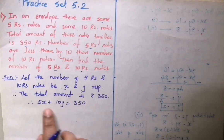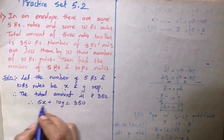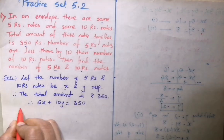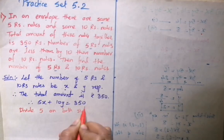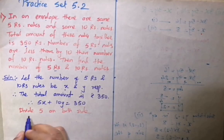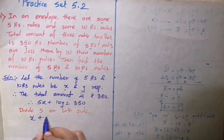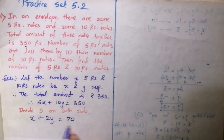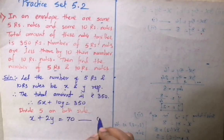Now students, observe that all the numbers are divisible by 5. So divide both sides by 5. Dividing by 5 on both sides: 5x divided by 5 is x, 10 divided by 5 is 2, and 350 divided by 5 is 70. So we get x plus 2y equals 70. Give this equation number 1.